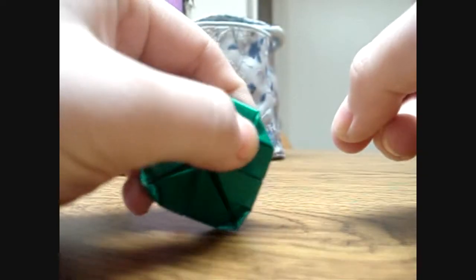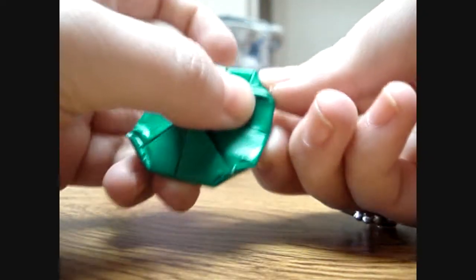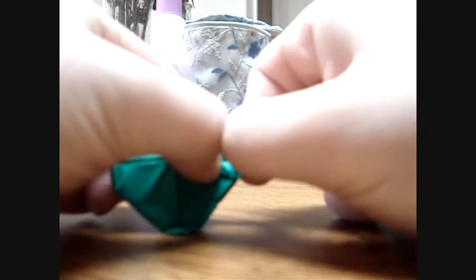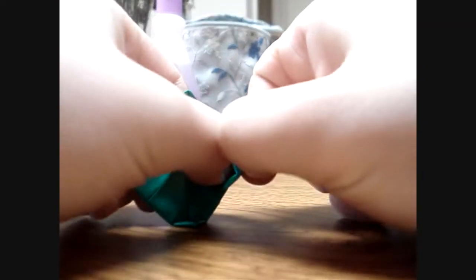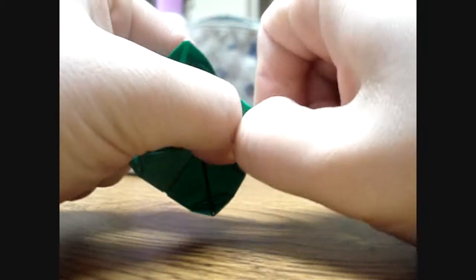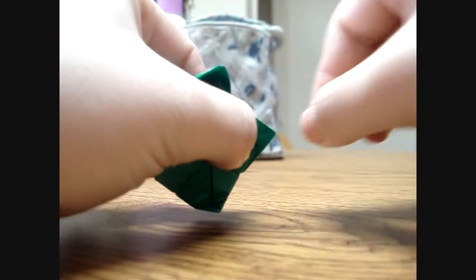And then this is the tricky part. You're going to kind of push down on this corner and you're going to take the flap of the corner from underneath and bring it around and kind of turn it inside out. And that's going to make a petal. And you're going to do that for the other three as well. This is where it can get kind of tricky and it's really easy to rip the paper when you're doing this part.